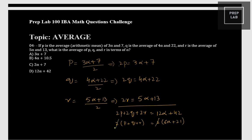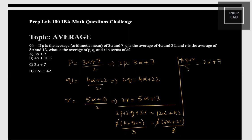Taking 2 as common and cancelling, we get p + q + r = 6 alpha + 21. To find the average of p, q, and r, we divide by 3 since there are three variables. So the average of p, q, r = (6 alpha + 21) divided by 3. That is the right option.